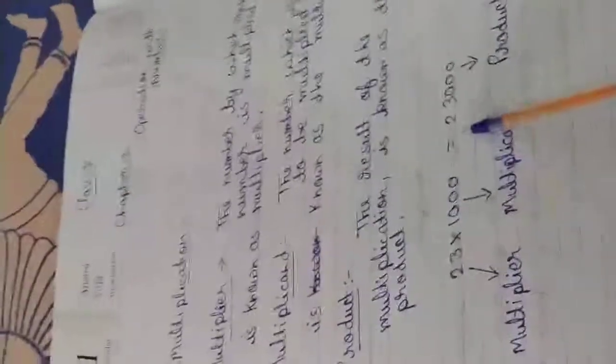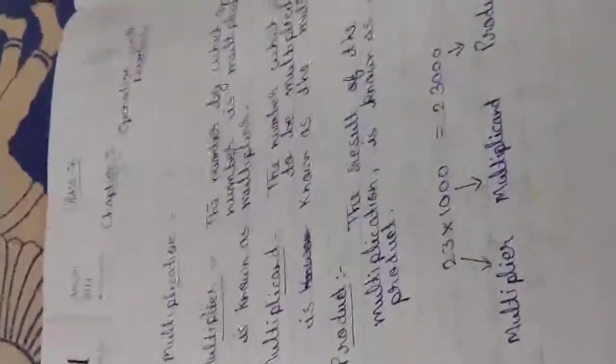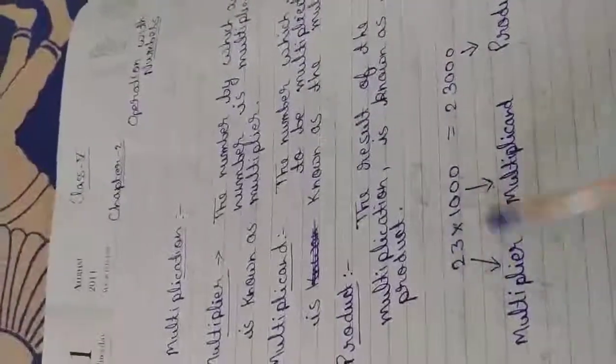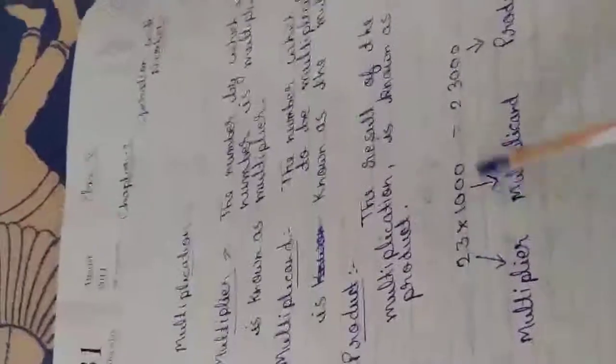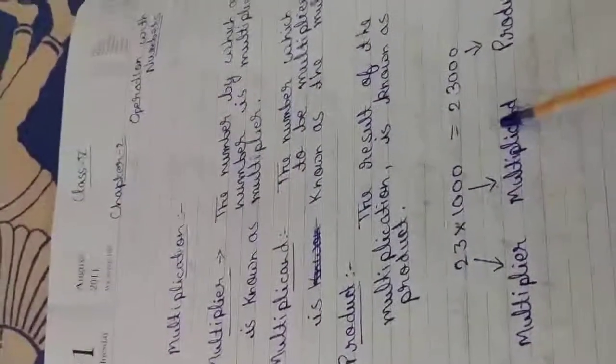The result of the multiplication is known as the Product. For example, 23 multiplied by 1000 equals 23000. So this 23 is the Multiplicand, 1000 is the Multiplier, and the answer is the Product.